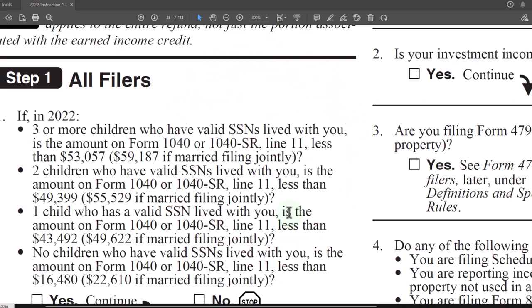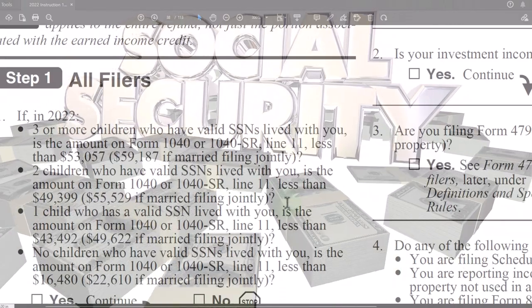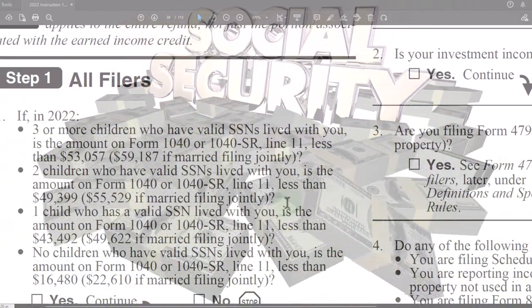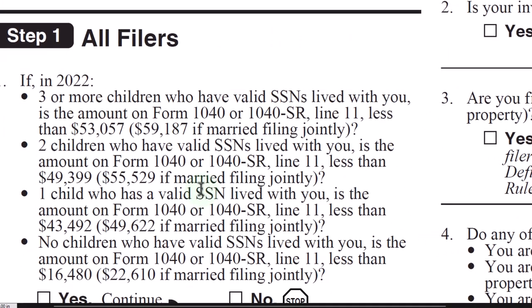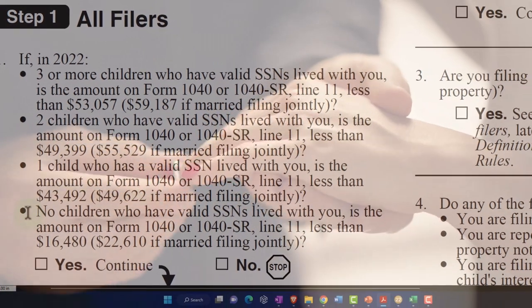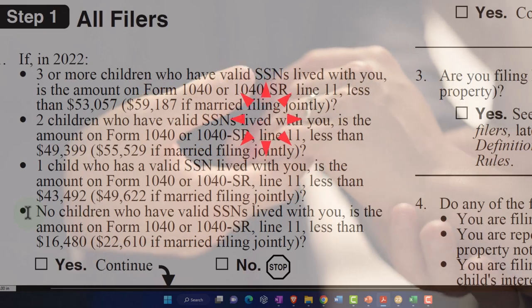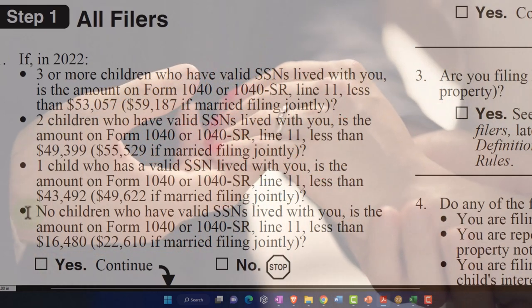If you're in the category of two children who have valid Social Security numbers living with you, is the amount on Form 1040 or 1040-SR line 11 — which is your AGI — less than $49,399, or $55,529 if married filing jointly? And then we've got the next tier: if you have only one child with a valid Social Security number, the credit is completely gone after you hit $43,492, or $49,622 if married filing jointly. And finally, if you have no children, then it's substantially lower — your line 11 AGI must be less than $16,480, or $22,610.